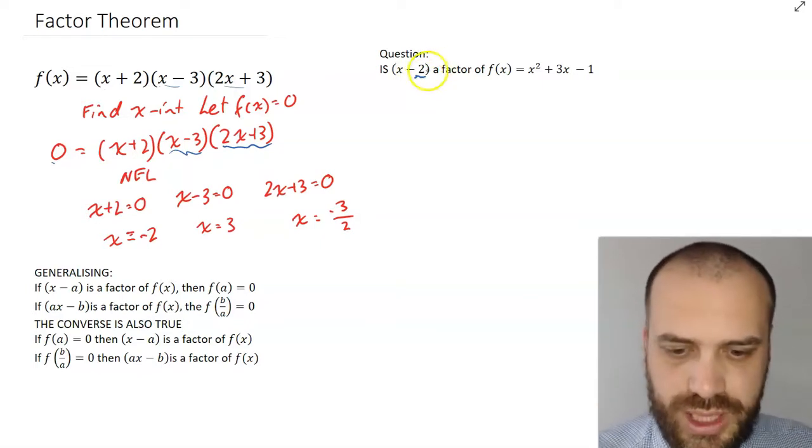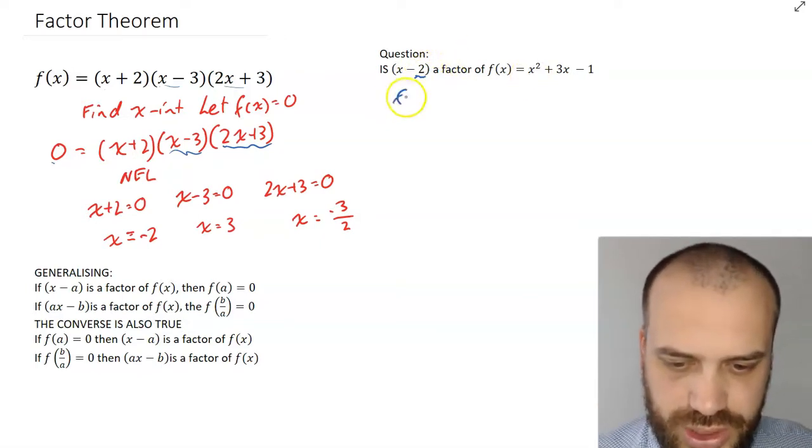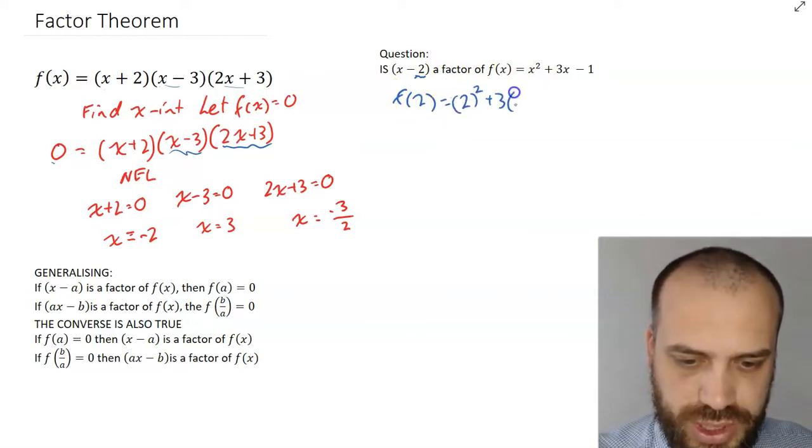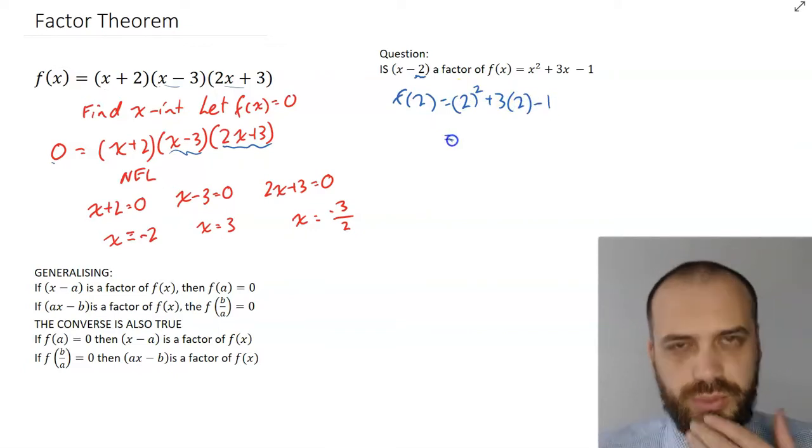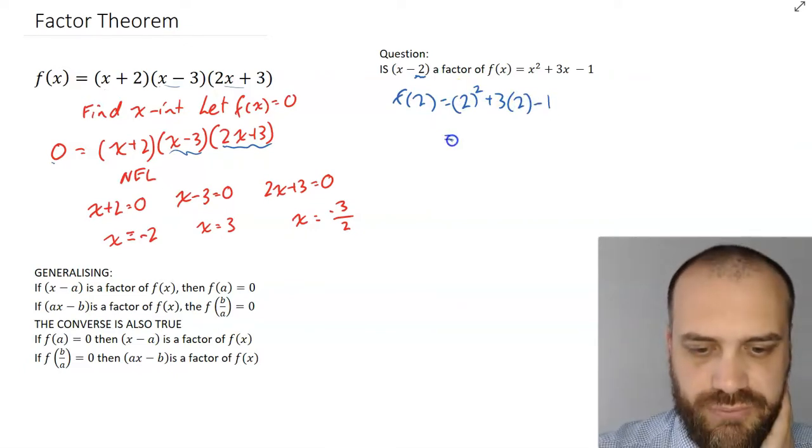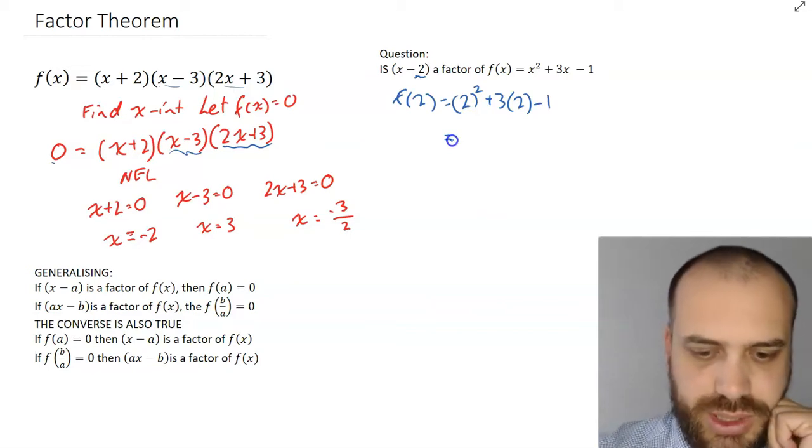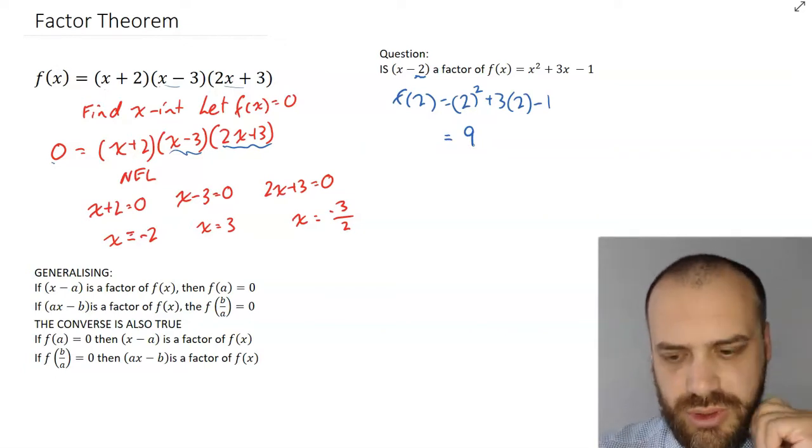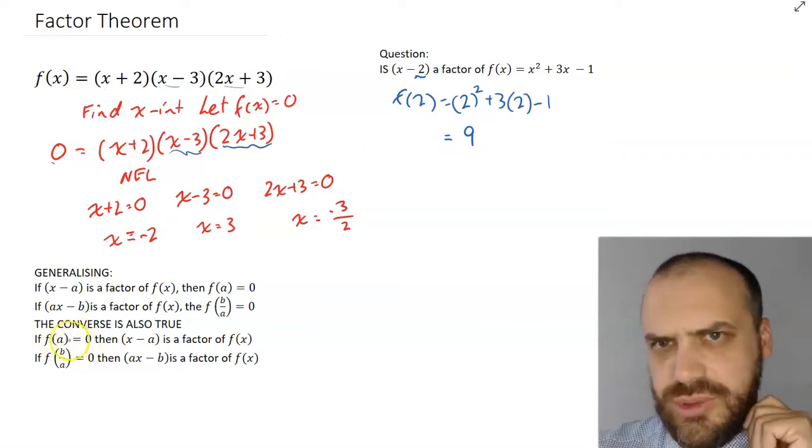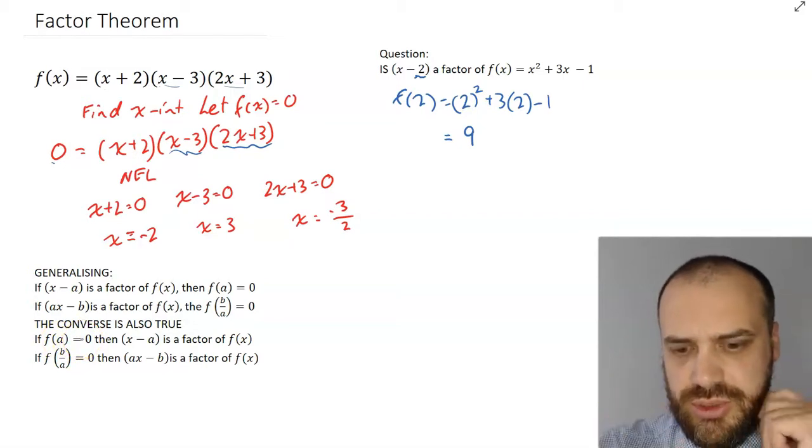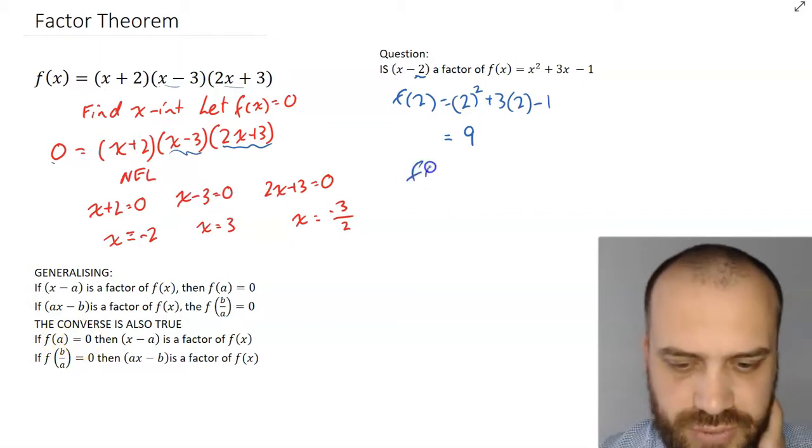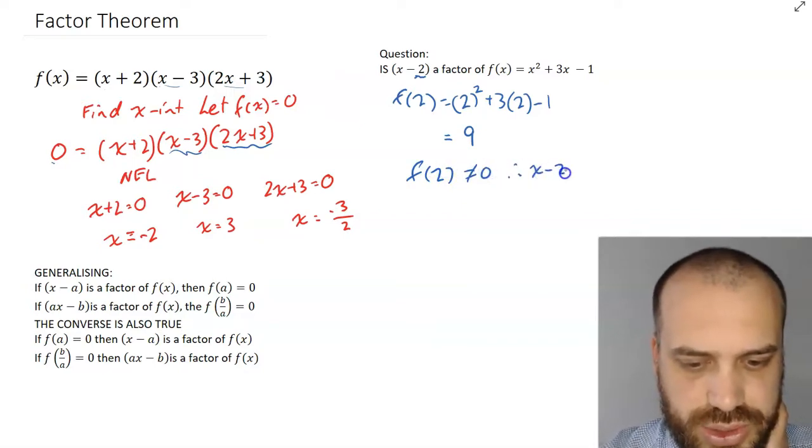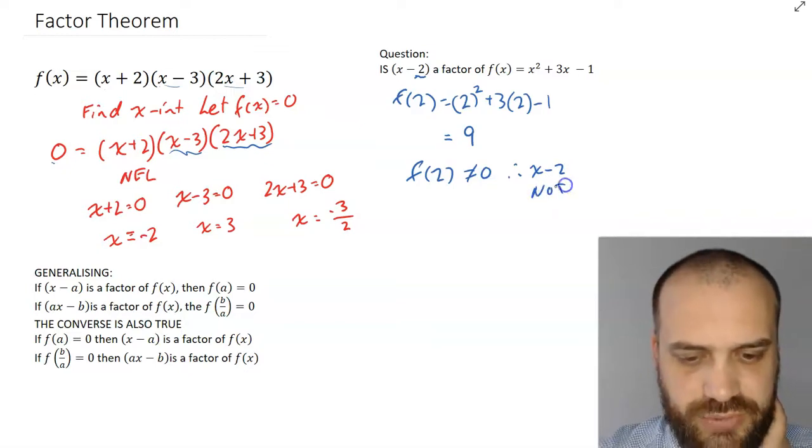If I were to sub 2 into my function f(2), that would be 2 squared plus 3 times 2 minus 1. Now, what's that going to be? That's going to be 4 plus 6 is 10 minus 1 is 9. Well, hang on. f(2) doesn't equal 0. f(a) did not equal 0 here. So, that means that (x - 2) is not a factor. So, f(2) did not equal 0. Therefore, (x - 2) is not a factor.